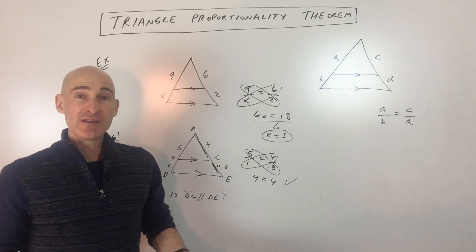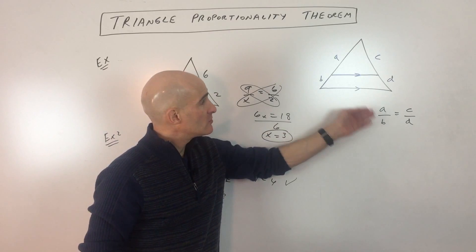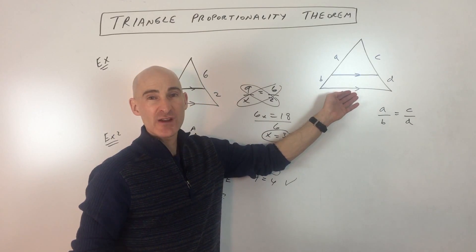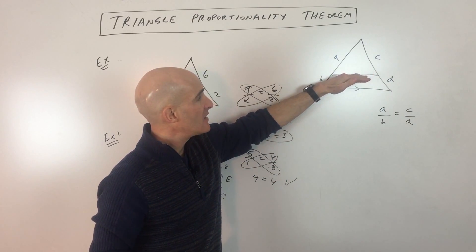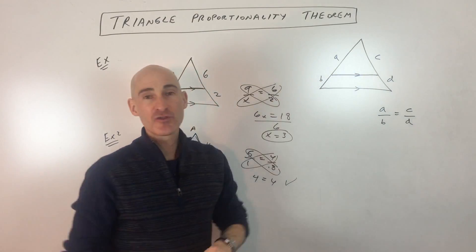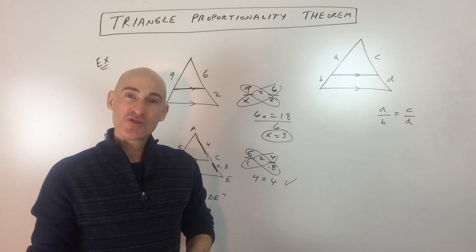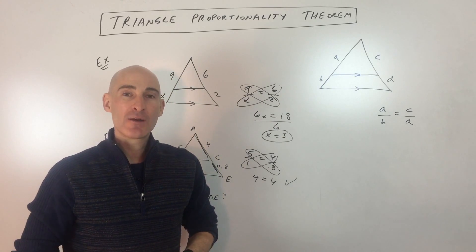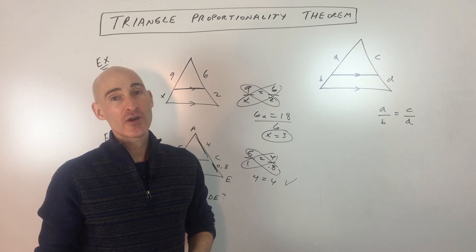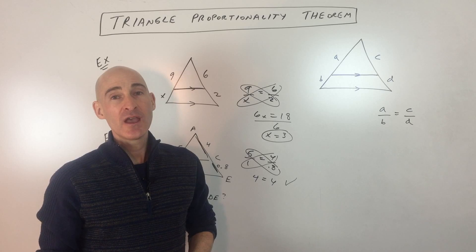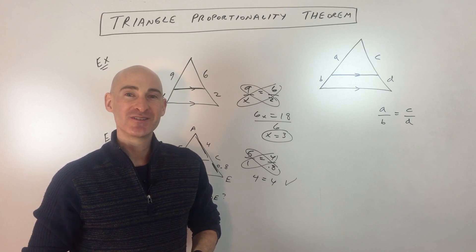Review the formula if you need to — Triangle Proportionality Theorem. It's pretty straightforward. The main thing is that the segment is parallel to the base, and you've got it. Subscribe to the channel and check out more math tutoring videos on my YouTube channel, Mario's Math Tutoring. I look forward to helping you in future videos.